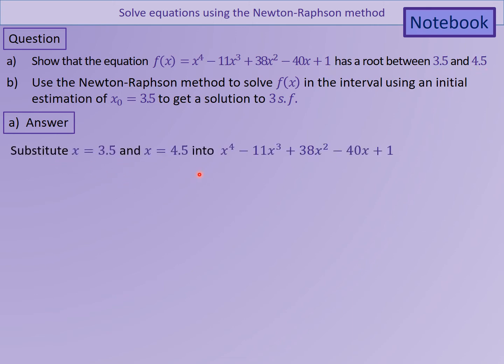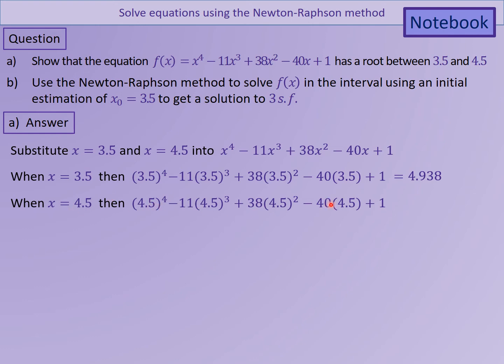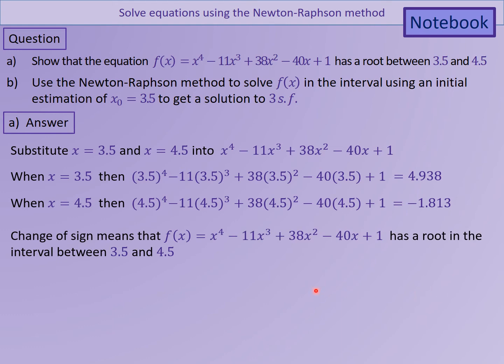I'm going to substitute 3.5 in, I'm going to substitute 4.5 in, and when I do that, 3.5, just put it in all those places, gets me 4.938. 4.5, when I substitute it in for the x's, gets me minus 1.813. Because it's a continuous function, and because they go from positive to negative, there is a change of sign, I can confidently say there is definitely a route between those two values. Now I'm going to use Newton-Raphson to help me find a better approximation than those two.